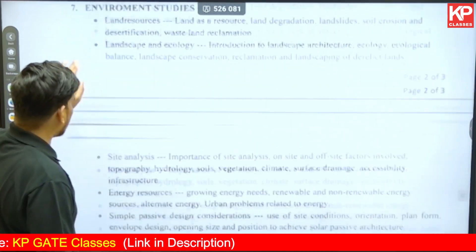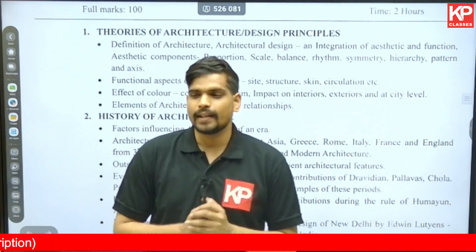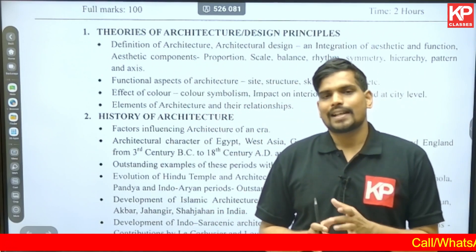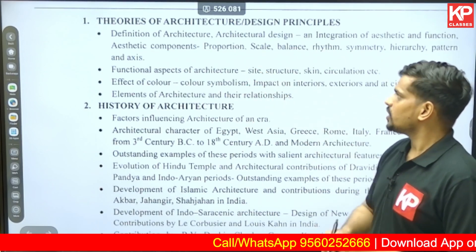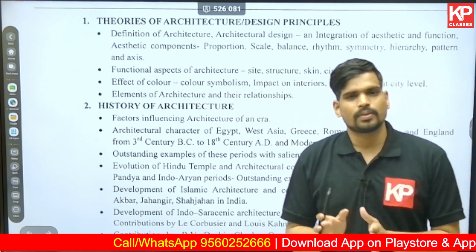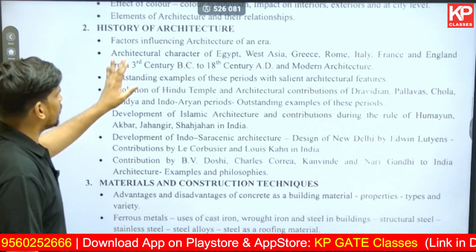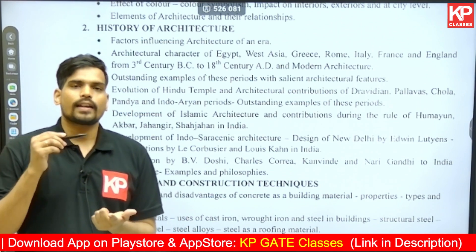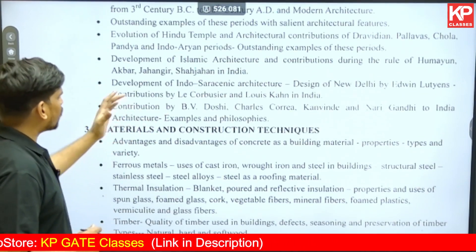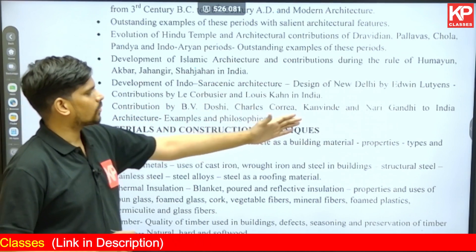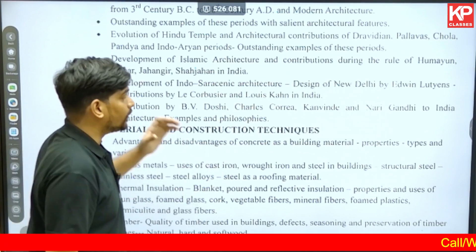Coming to Paper 2 — the architecture part — there are a total of ten sections mentioned in the syllabus. The first section is Theories of Architecture and Principles of Design, which includes principles of design, understanding color theory, and various other design principles. The second section is History of Architecture, which includes Indian history of architecture, Western history of architecture, and modern architecture. Specific contributions of architects like B.V. Doshi and Charles Correa are also mentioned in the syllabus.